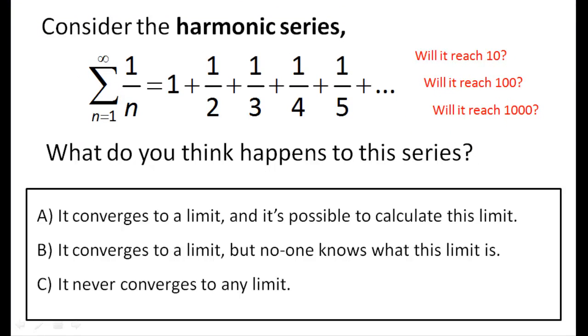So let's make it a multiple choice question. Which of these answers do you think is correct? Option a, the series converges to a limit which we can calculate. Option b, the series converges to a limit but it's impossible to work out what the limit is. And option c, the series doesn't converge to any finite value. So if you want to have a think about this question you should pause the video now otherwise we'll reveal the answer in a few seconds.